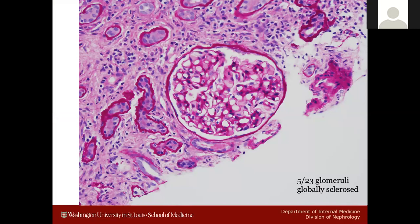Here's one of the glomeruli on high-power PAS stain. The basement membrane looks okay, the mesangium looks okay, and the capillary loops look open. But going toward the interstitium, there are a bunch of cells in there and all the tubules — as we saw on low power — are spread apart with closed-looking lumens. There's space within the interstitium and a cellular infiltrate.